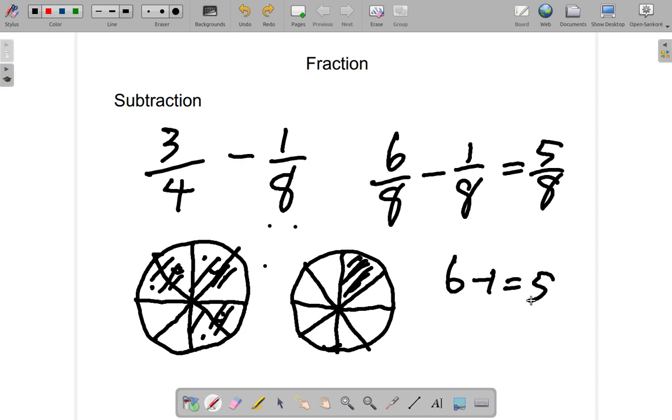So, I have 6 eighths. I take away 1 eighth. And I'm left with 5 eighths. So, that's how we subtract fractions. We'll move on next time.